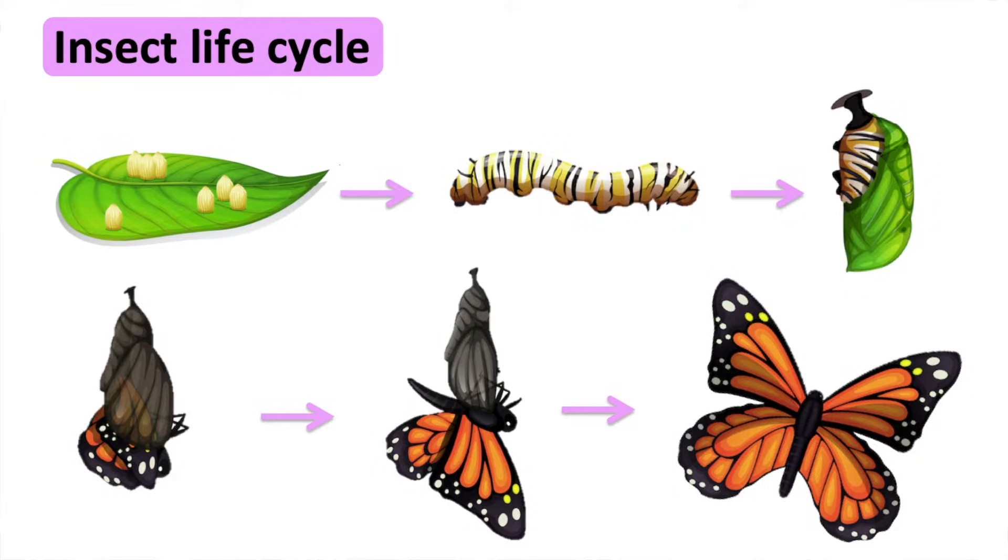For example, a butterfly. First the butterfly lays eggs on the leaves of a plant. Inside the eggs caterpillars begin to grow. When the caterpillar is large enough, it leaves the egg by eating it.